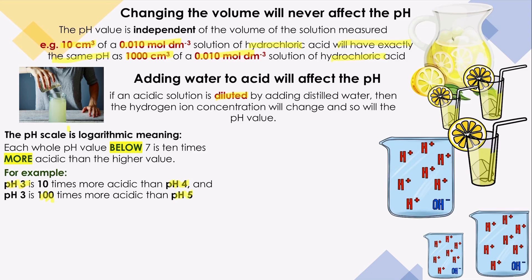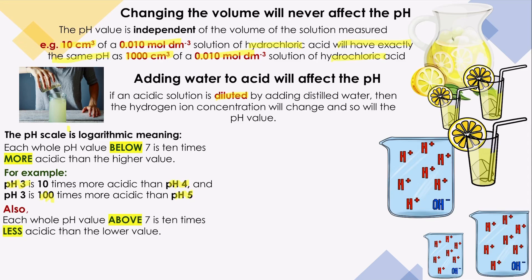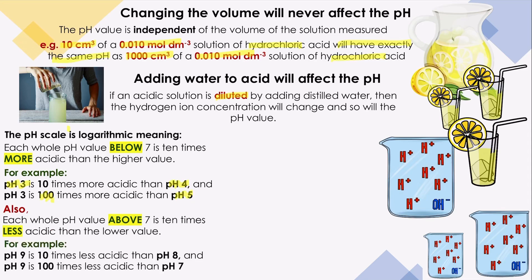We should understand that one pH unit is equivalent to ten times more or less concentration of hydrogen ions. Each pH value above seven is ten times less acidic than the lower value. So pH 9 compared to pH 8 — nine is less acidic by a factor of ten. And pH 9 compared to pH 7 — nine is a hundred times less acidic, two pH units apart.